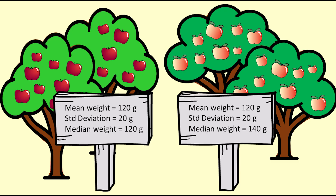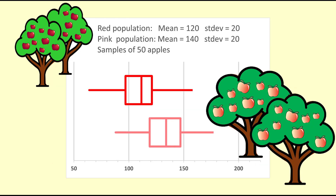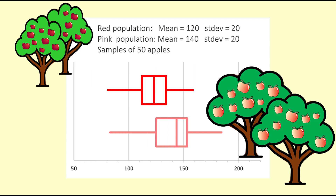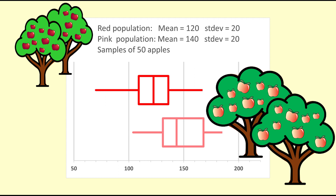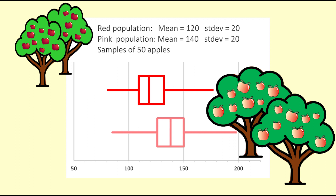Now we will change the pink apple population to one with a median of 140 grams. The pink apples in this population will tend to weigh 20 grams more than the red apples. We will look at several pairs of box plots to see what happens when there is a difference between the populations. We would expect a difference as large as this to show up most of the time. In just about all of the sample sets, it is clear that the median for the pink apples is considerably higher than for the red apples. The median for one or both of the samples is outside the box of the other sample.